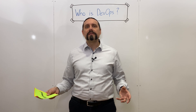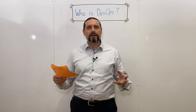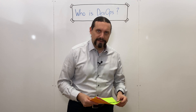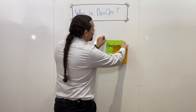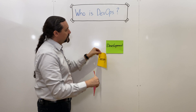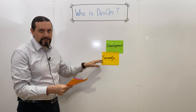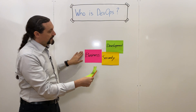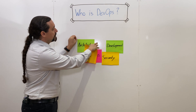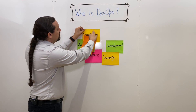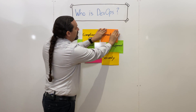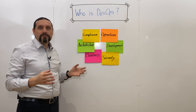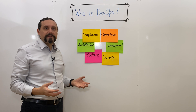In my opinion, we need to include all the people who are involved in continuously delivering value to the customer. And therefore we should involve, of course, development, but also include security. And don't forget to include business, architecture, compliance, and of course operations. These are the people that should be included when we are doing DevOps and continuously delivering value to the customer.